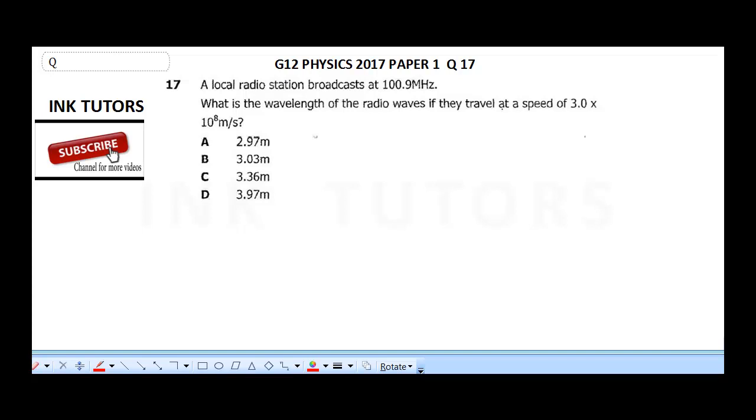Okay, today's question is going to be from Physics 2017, paper 1, question 17. It says, a local radio station broadcasts at 100.9 MHz, what is the wavelength of the radio wave if they travel at a speed of 3 times 10 raised to the power 8 meters per second?